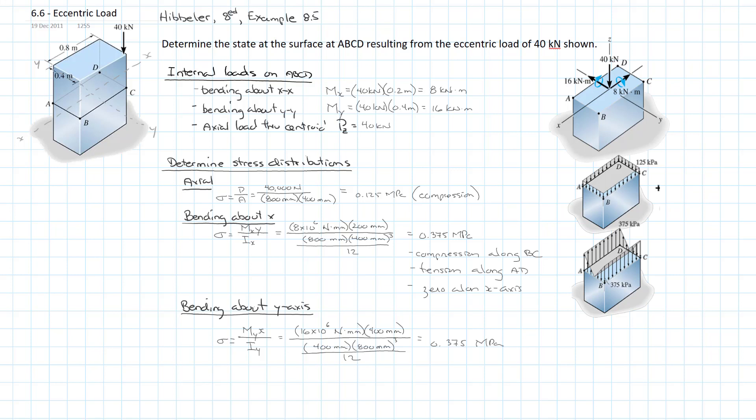So a higher moment, but we have a stronger resistance because our moment of inertia would be stronger in that vertical direction about yy. And so we get the same value, 0.375 megapascals. So using my right-hand rule, that's going to be compression along CD, tension along AB, and 0 along the y-axis. And once again, I'm going to bring in the diagram that reflects that. And there we have it. So we can see what the stress distribution would look like as a result of the bending about the y-axis.